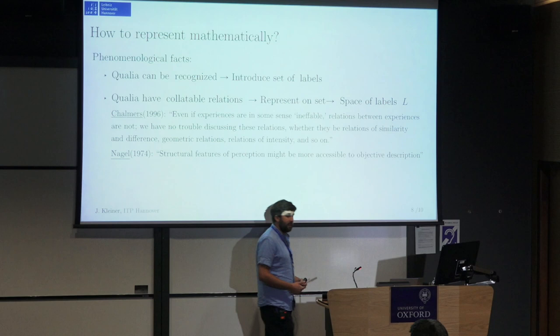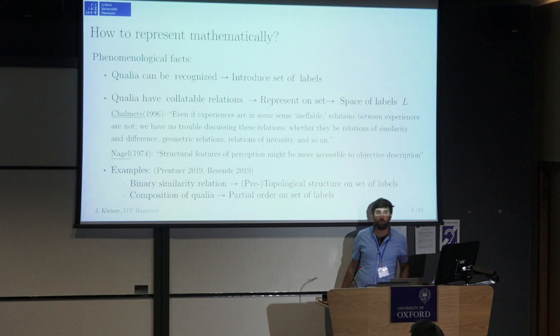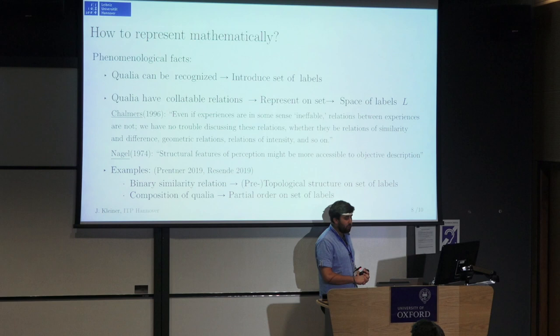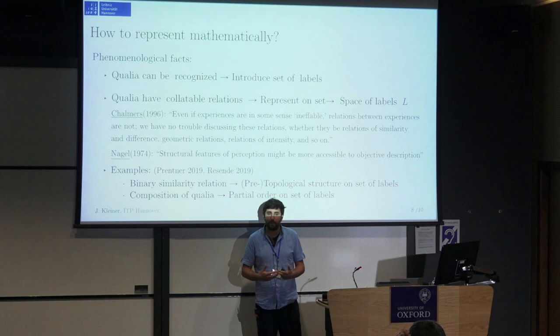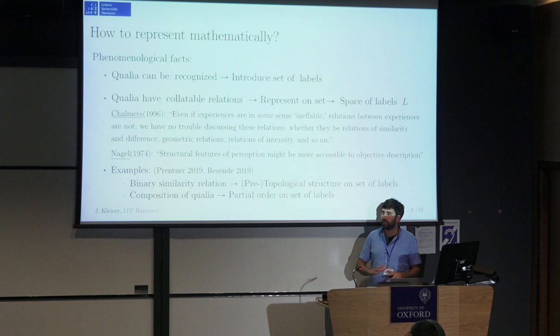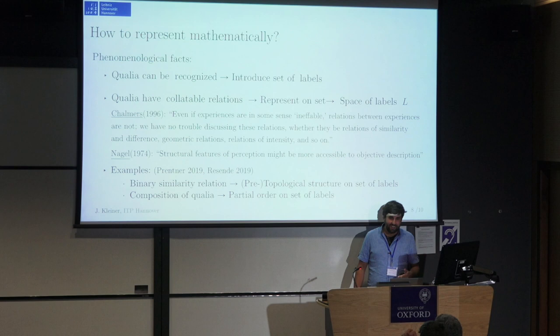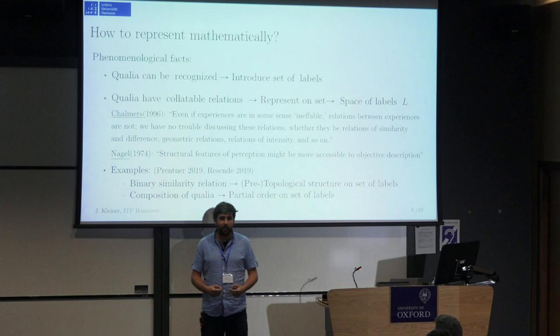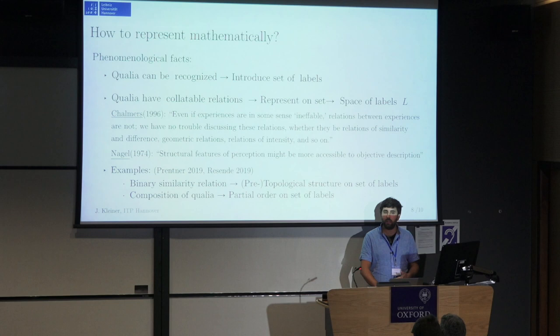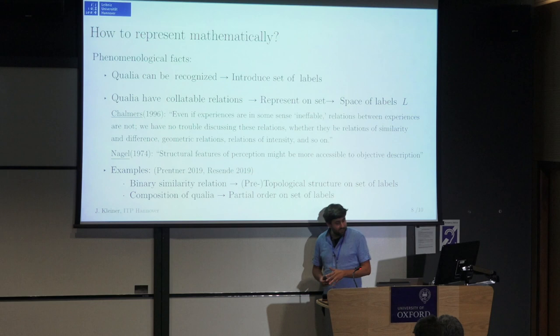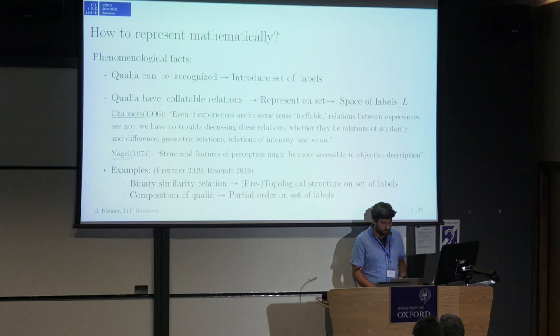In a paper — the reference to which I'll give later — I've done several examples; let me mention two related to the works of Robert and Pedro. For example, if you consider that there's a binary similarity relation between qualia — things are similar or they are not — then you can represent that as a topological or pre-topological structure on the space of labels. Or, if you think about qualia being composed — whenever you have two qualia you could compose them to get another non-collatable aspect — you can represent that as a partial order on the set of labels. So let's assume we have this space of labels whose mathematical structure represents the structural features of perception. I want to convince you that we can now use that to address these things scientifically.